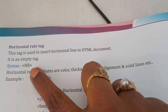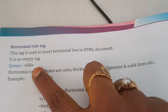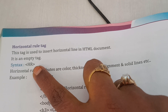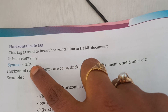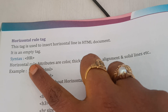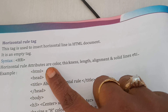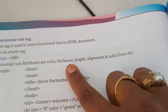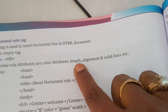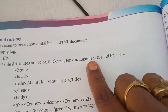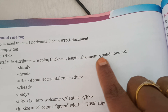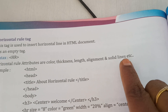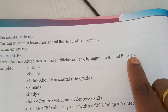The syntax is HR — horizontal rule tag. The horizontal rule attributes are: Color, Thickness, Length, Alignment, and Solid line, etc.